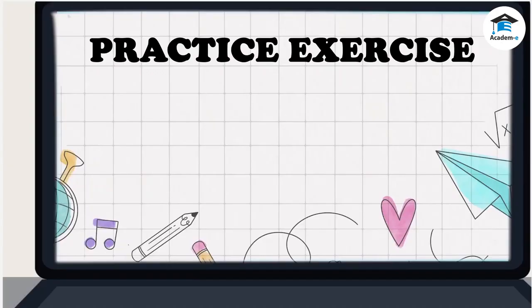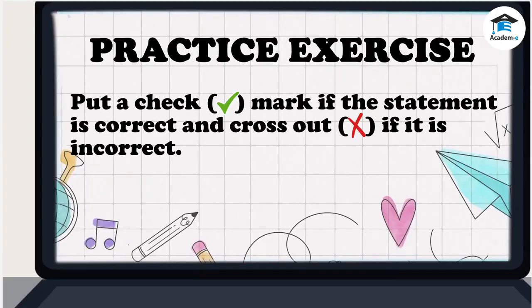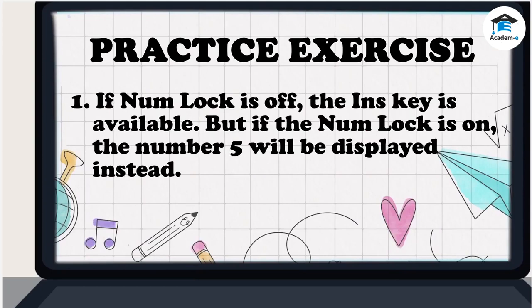Practice Exercise: Put a check mark if the statement is correct and cross out if it is incorrect. Question 1: If Num Lock is off, the Ins key is available, but if the Num Lock is on, the number five will be displayed instead.